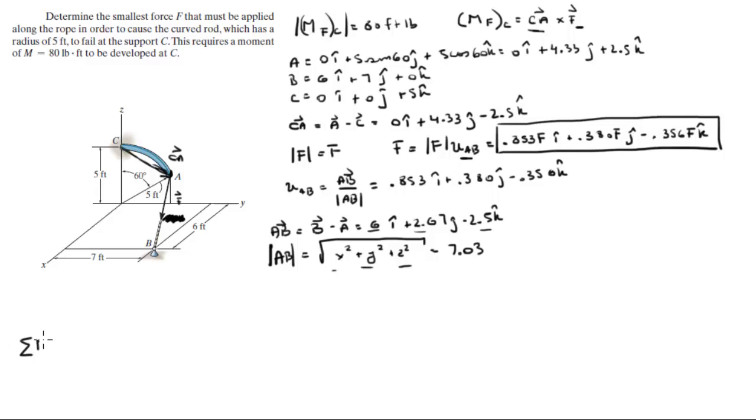So now, the moment that F creates about C is given by CA cross F. So what we do is you draw your matrix: I, J, K, CA, we found it right here. And it's 0, 4.33, negative 2.5. And the Cartesian vector form of F is 0.853 F, 0.380 F, and negative 0.356 F.